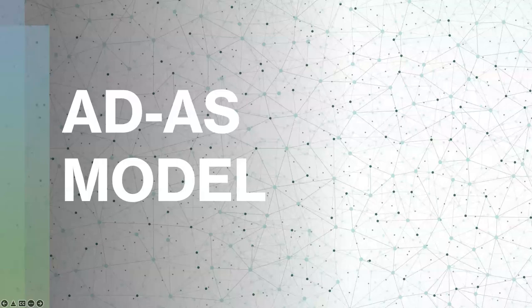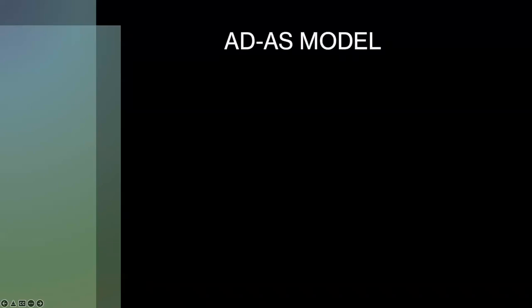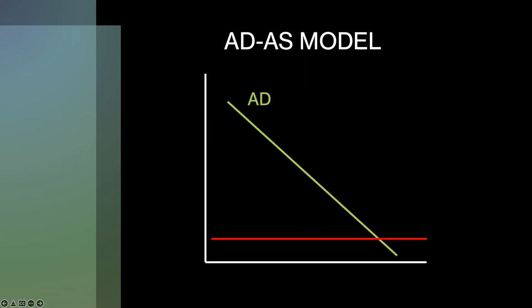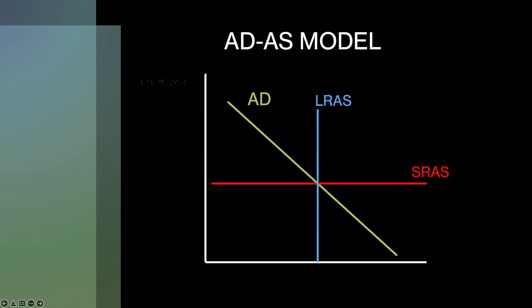Thank you for joining me today to go over the ADAS model and a few examples of how shocks affect it to tie it all together. The aggregate demand aggregate supply model is designed to understand the business cycle and examines aggregate demand against the short-run and long-run aggregate supply, with the price index or GDP inflator on the y-axis and the real GDP on the x-axis.